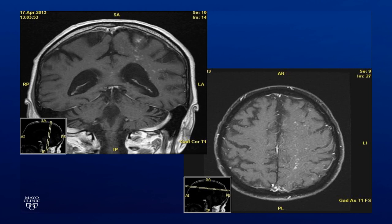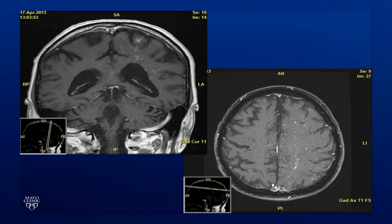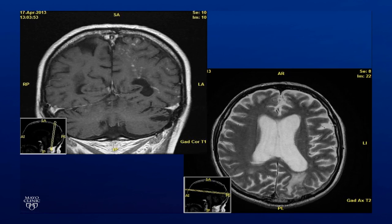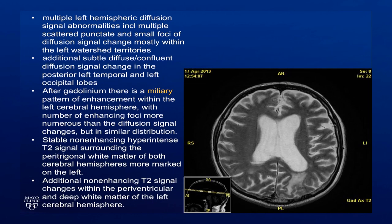This is the brain MRI obtained right around the same time. We can see in the left hemisphere — the right side of the picture — some white spots in the brain matter. Additional white spots are visible on T1 images on the left and a T2 image on the right. The important word in the radiology report is 'miliary' — the radiologist described a miliary pattern of enhancement within the left cerebral hemisphere, which certainly caught my attention because miliary brings to mind tuberculosis for most of us.